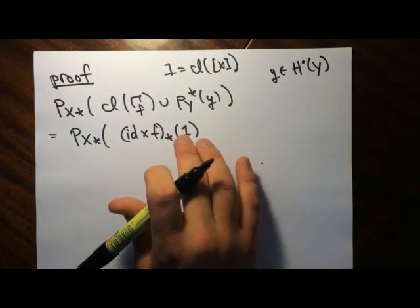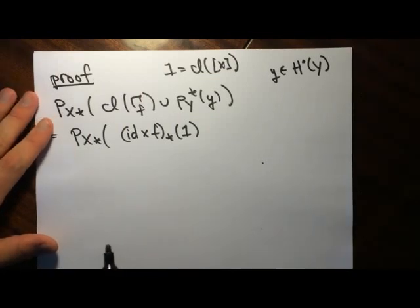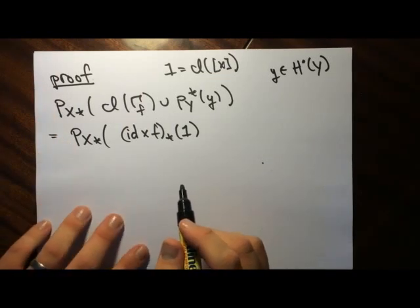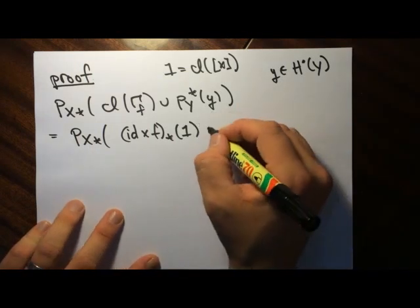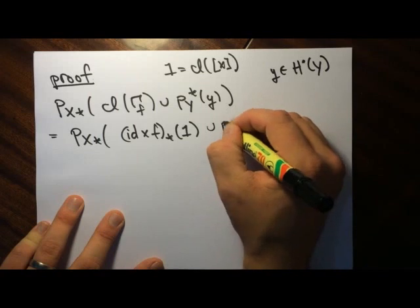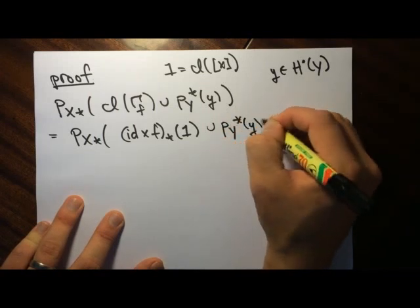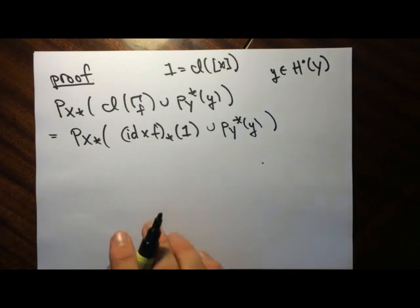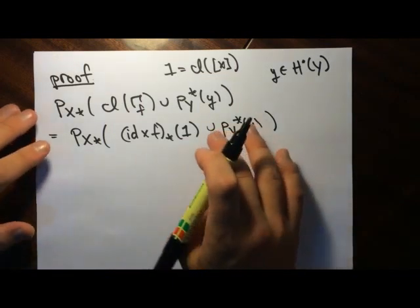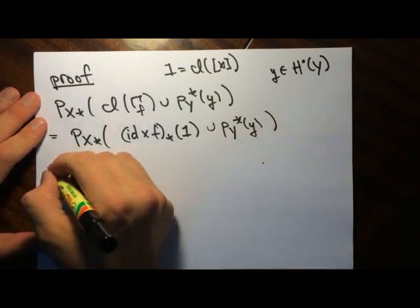So we have this class here, and we cup it with p_Y star of y. Now I want to apply the projection formula backwards. I take the class one, cup product, and pull back by the identity cross F.